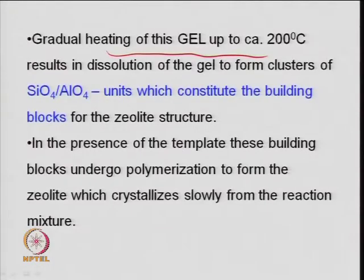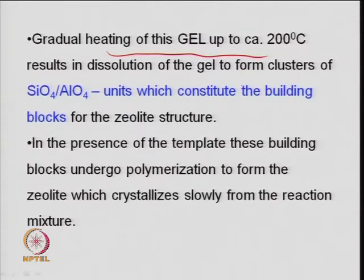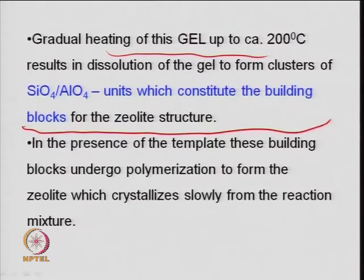When you heat this gel at approximately 200 degrees centigrade, that gives you dissolution of the gel. Dissolution forms the SiO4 to AlO4 building structures - 4-member, 6-member, 5-member rings. This depends on time versus temperature and the amount of water present. This constitutes the building block for the zeolite structure, and then further crystallization and nucleation starts in the presence of the template.